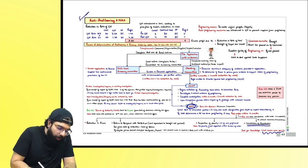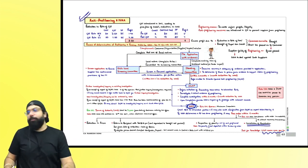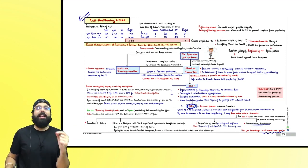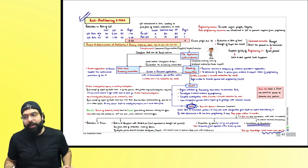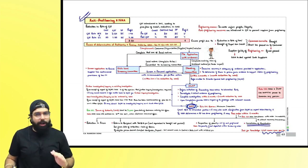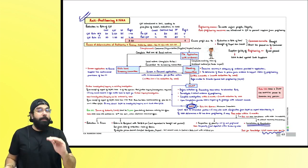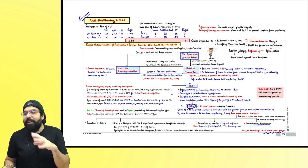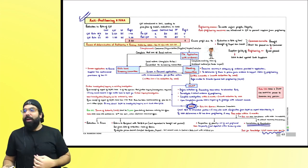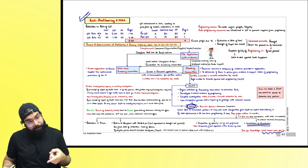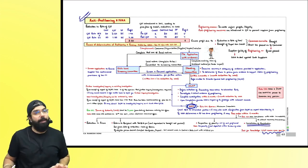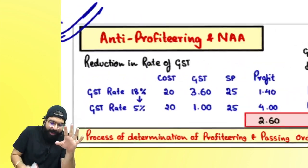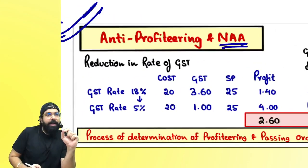Let's go ahead and do miscellaneous provisions now. Miscellaneous provision — anti-profiteering and national anti-profiteering authority. Although not a very important topic from an exam point of view, in your chapter of miscellaneous provisions this becomes a C-graded chapter, A-graded topic. Let's go ahead and understand quickly: anti-profiteering and national anti-profiteering authority.